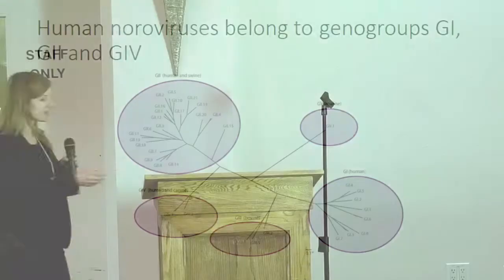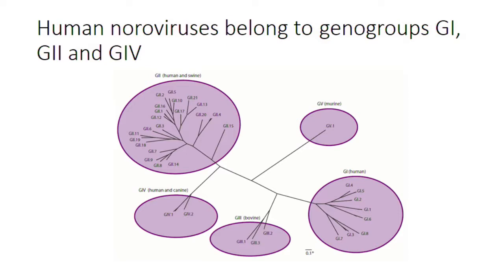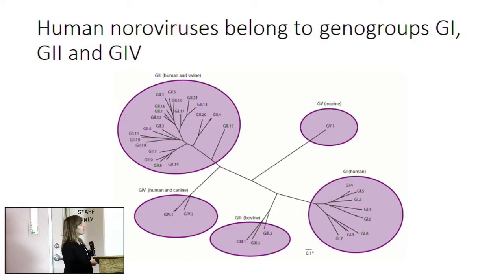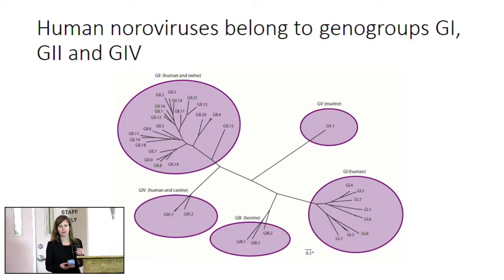Genotyping really did help in this outbreak investigation. We do genotyping for a representative sample from every outbreak in British Columbia and have been doing so since the mid-to-late 2000s. G1 and G2 are the most predominant human types of norovirus, and the majority of BC outbreaks up until recently were caused by a strain called G2.4, which was considered an epidemic strain.